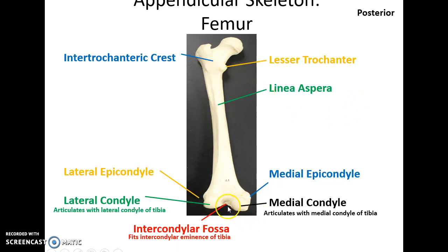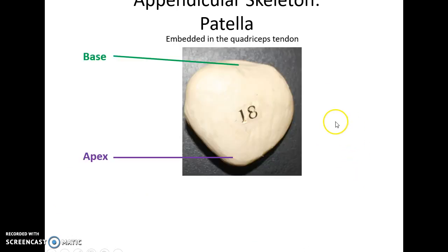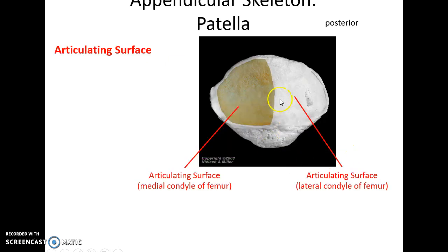Go down to the distal end — you've got these two rounded smooth knobs called the condyles: a lateral condyle and a medial condyle. Above them is the lateral epicondyle and the medial epicondyle. The depression between the two condyles is the intercondylar fossa. Down at the distal end is also a smooth area called the patellar surface, articulating with the patella. Here is the patella, a small sesamoid bone, with a wide base at the proximal end and a pointy apex at the distal end. Flip it over — you've got the articulating surface that articulates with the femur.